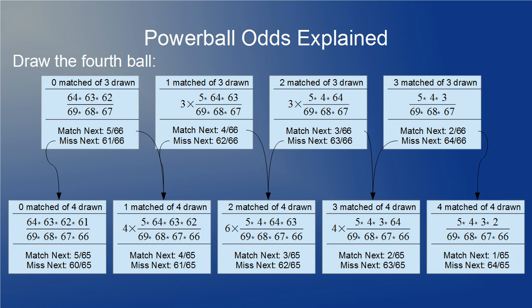So now on to the fourth ball. We have 4 boxes leading into 5. In each case, we take the odds for the current step at the center, multiply by the odds at the bottom for a match versus no match, draw arrows to the appropriate next step based on how many balls will be matched in that case, and add the incoming arrows. Some patterns are emerging, and these patterns lead to formulas. Without discussing in too much detail, you can see that there are products of steadily decreasing quantities, like 5 × 4 × 3 or 69 × 68 × 67, and these formulas involve factorials. Also, many of the odds have an additional factor in front of them, like 4 or 6, and those factors come from Pascal's triangle.